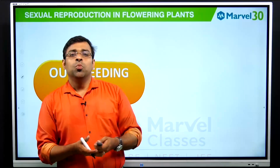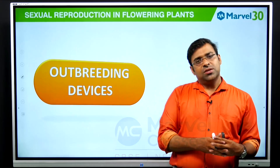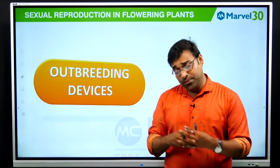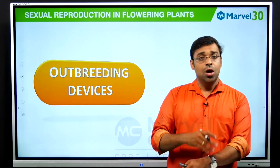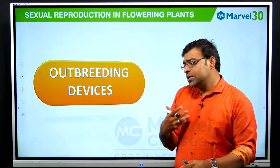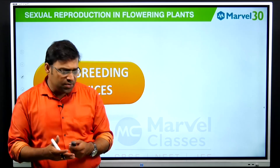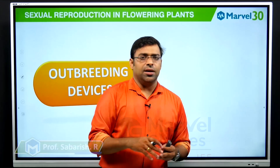Hello students, today in our botany session on sexual reproduction in flowering plants, we'll be dealing with the concept of outbreeding devices. In our previous videos we dealt with self-pollination and cross-pollination. Plants always prefer cross-pollination because it produces more varieties, whereas self-pollination does not. So how does a plant prepare itself for cross-pollination? We'll be dealing with this as outbreeding devices.